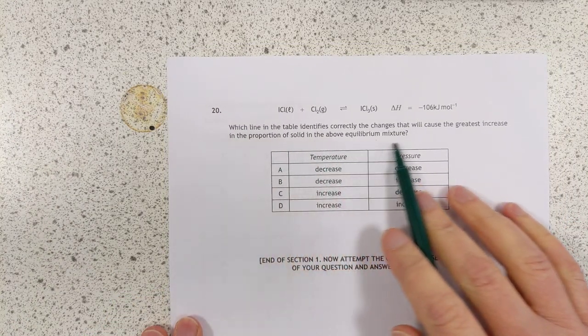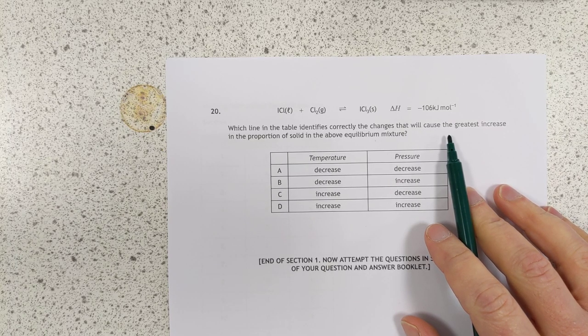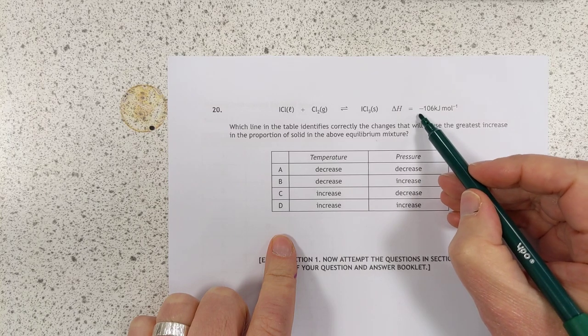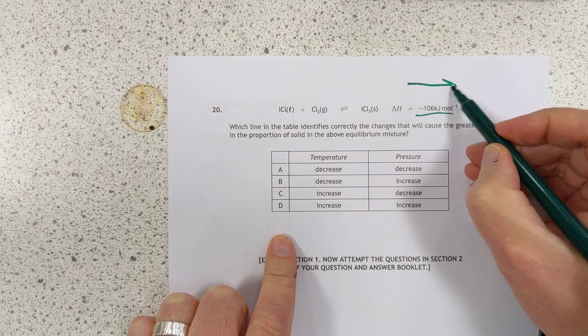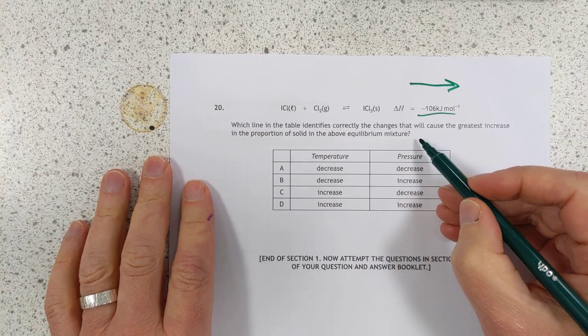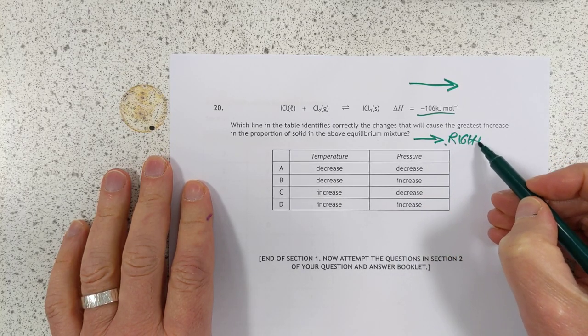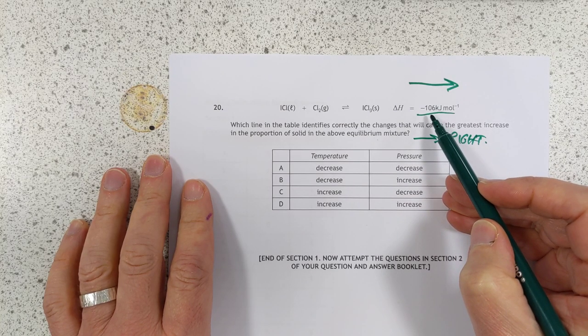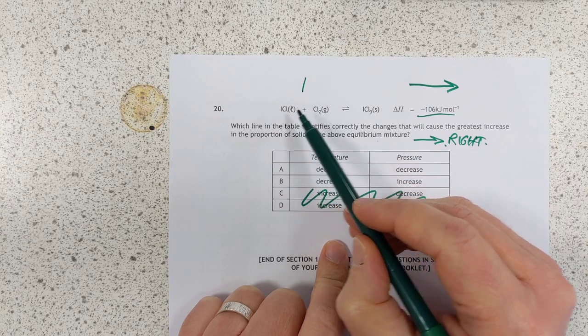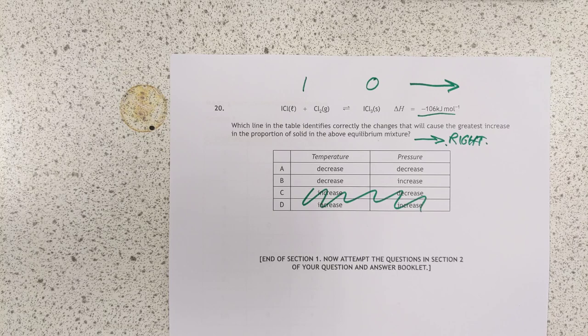Number 20. Last question. Which line on the table correctly identifies the changes that will cause the greatest increase? Another equilibrium question. Delta H is negative 106 kilojoules. And that is from left to right, which means going this way is exothermic. They want the greatest increase in the solid. So we are trying to drive the equilibrium to the right. So in this case, we want a reduced temperature. So it's a lower temperature. So we can scratch these two. And if you have a look at the moles of gas, you find there is one mole of gas on the left, and zero moles on the right. If you increase the pressure, the equilibrium will move to the side with the lowest number of moles of gas. So in this case, we want a high pressure, which is B.